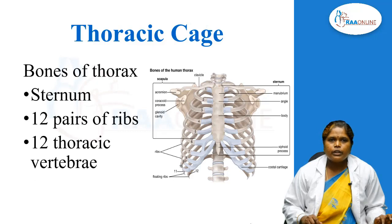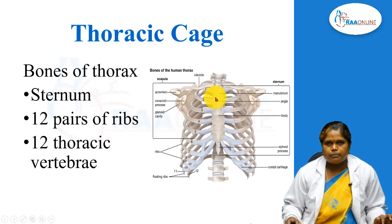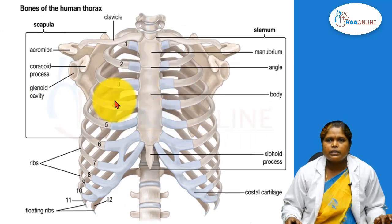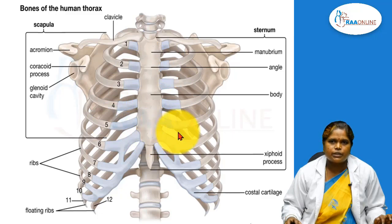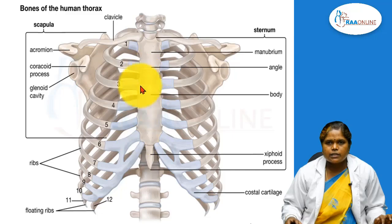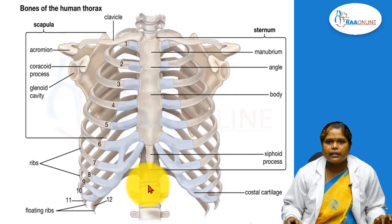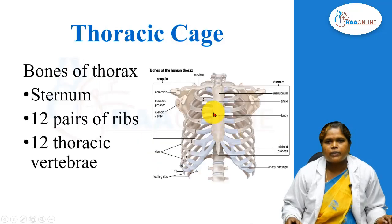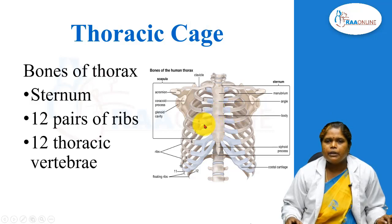Before going into the topic, let us see what is the thoracic cage. The thoracic cage is a very important structure which protects the lung and the heart. This cage is formed by the sternum anteriorly, 12 pairs of ribs on the lateral aspect, and posteriorly 12 thoracic vertebrae. These bones form the thoracic cage, and the sternum, ribs, and vertebrae all articulate by many joints — these joints form the joints of thorax.